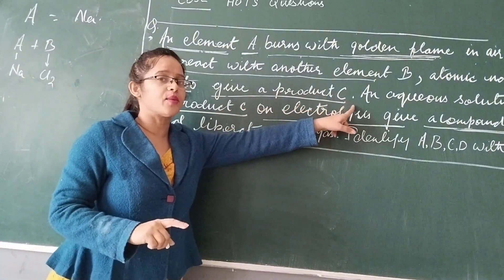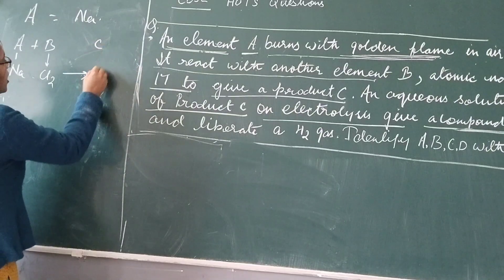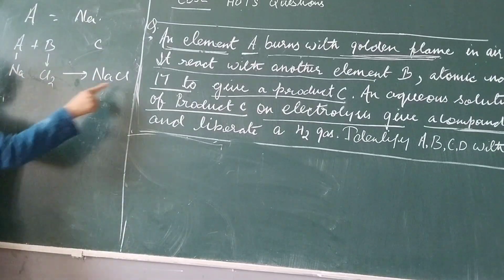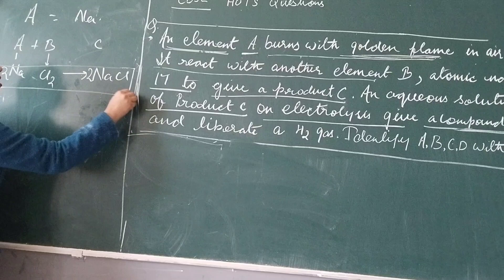If A reacts with sodium, then we can write C. So which is C? C is sodium chloride. Now you balance it. 1 sodium, 1 sodium balance. 2 chlorine, 1 chlorine. Here we balance it. So what is our reaction?